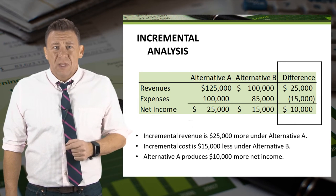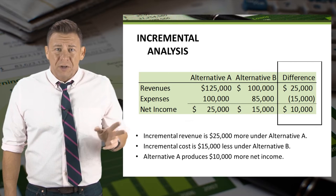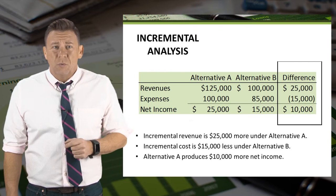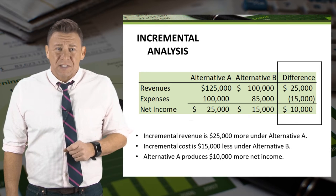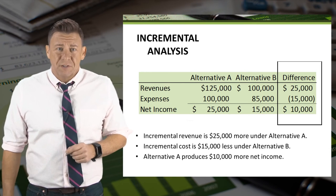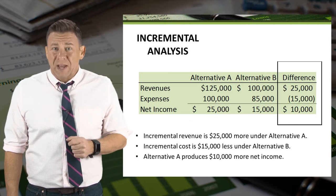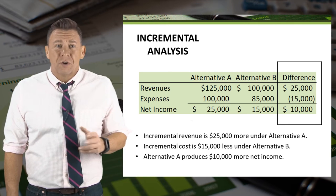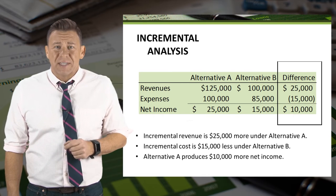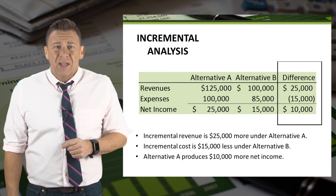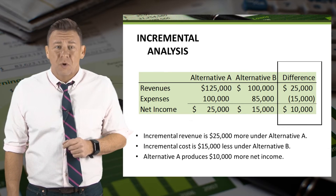Here is a very simple example. In this case, we have two alternatives, A and B. We have both revenues and expenses, and we need to decide which to choose. Let's do that by using incremental analysis, which focuses on the differences. Alternative A increases revenue $25,000 over Alternative B. Alternative B has $15,000 less expense than Alternative A. Therefore, Alternative A provides $10,000 more of income.